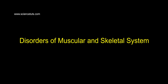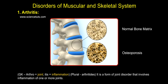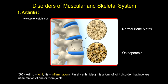Disorders of Muscular and Skeletal System. Arthritis — it comes from the Greek word 'arthro', meaning joint, and 'arthritis' means inflammation. It is a form of joint disorder that involves inflammation of one or more joints.